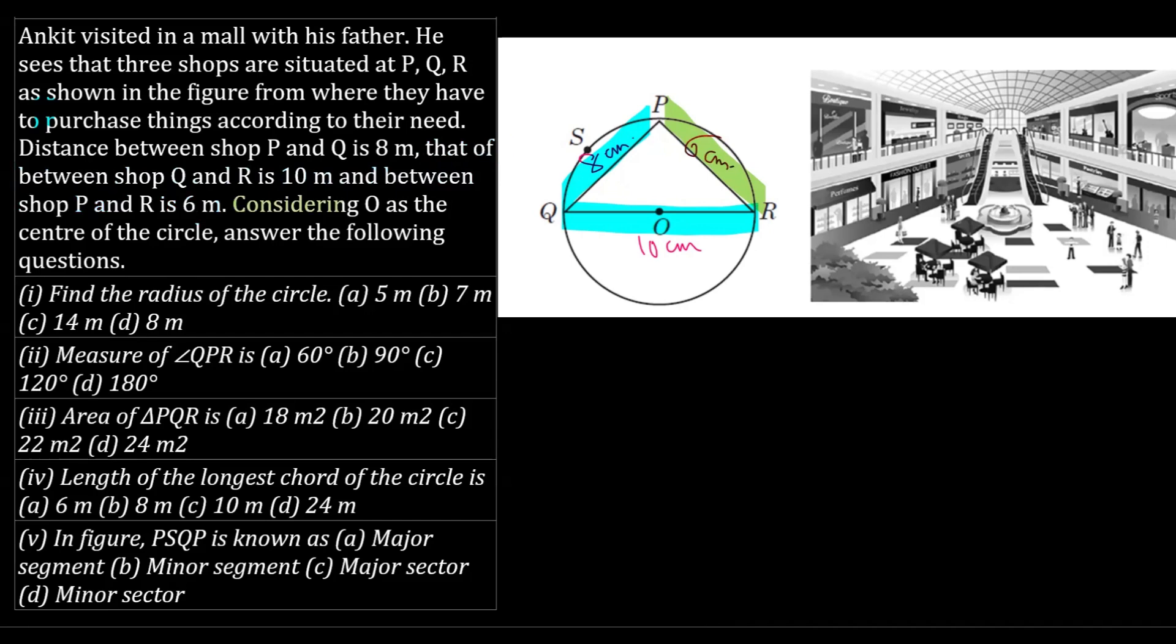Further it says consider O to be the center of the circle and we have to answer questions based on this information. If I read the first question, it says find the radius of the circle. Looking into the diagram and considering that QR is passing through the center, technically I can take QR as the diameter. But it's not necessary that the diagram should be given like this. Consider we are not given that QR is passing through the center. In that case, what we are going to do is apply converse of Pythagoras theorem.